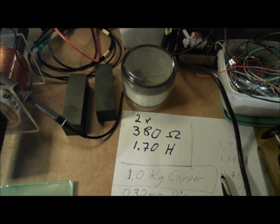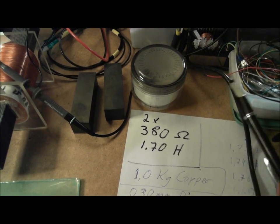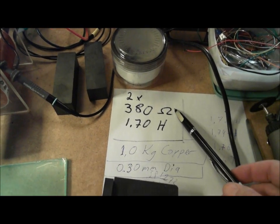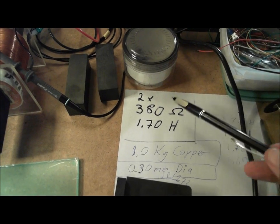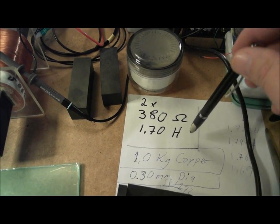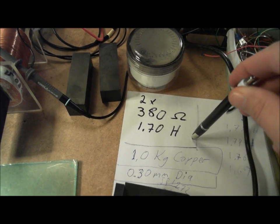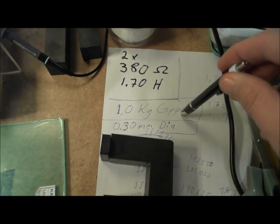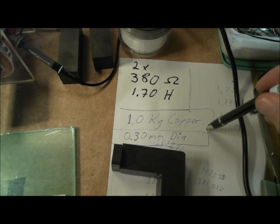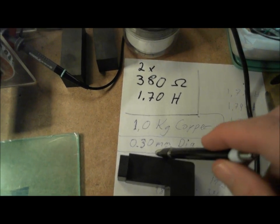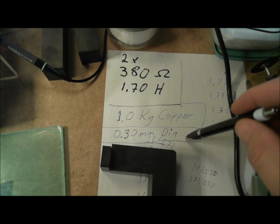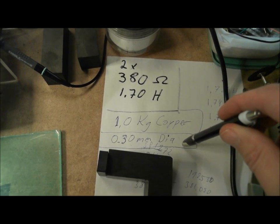Each coil has a resistance of 380 ohms and the inductance is 1.7 henrys. Each coil has 1 kilo of copper and the wire is 0.30 mm in diameter.